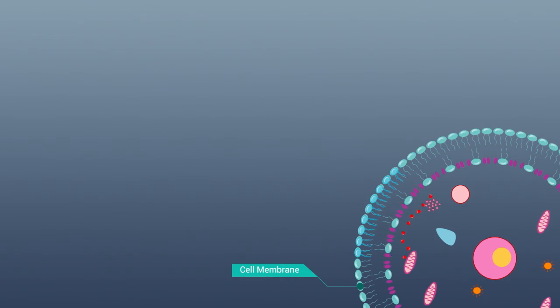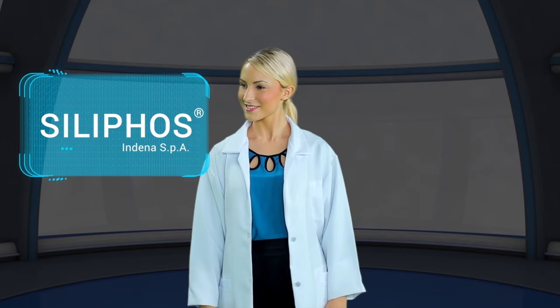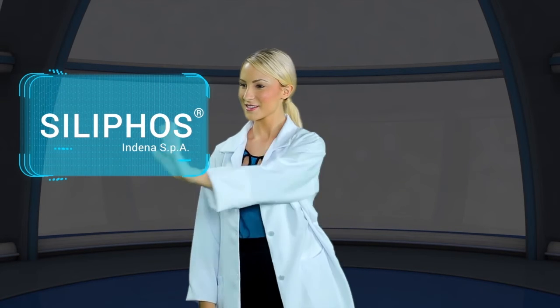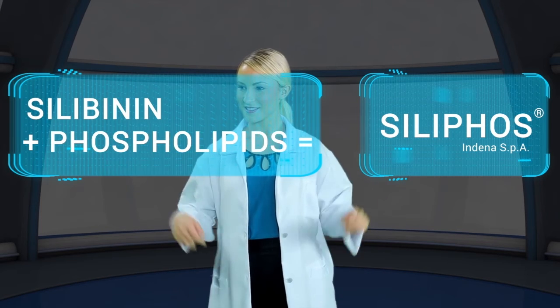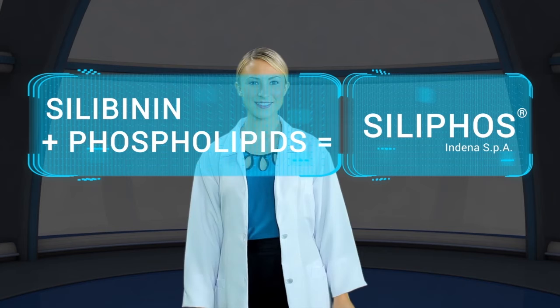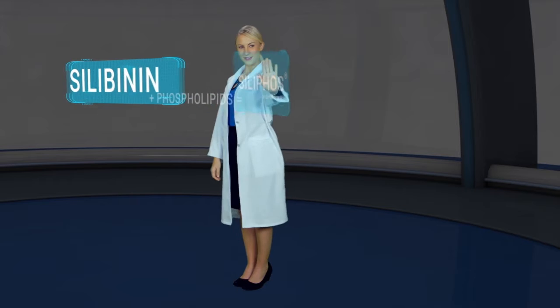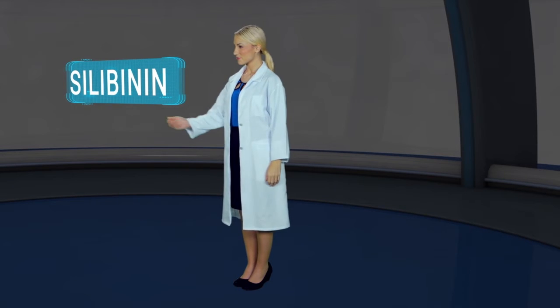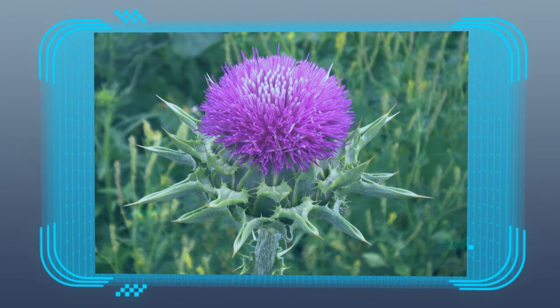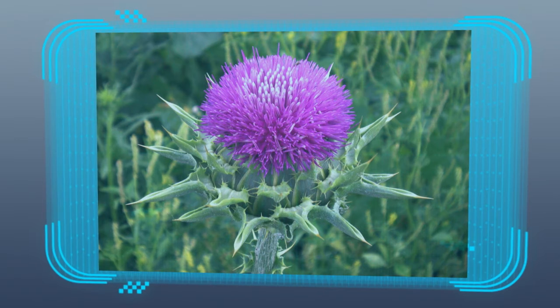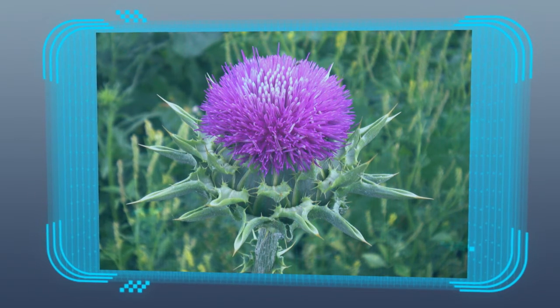Let's take a look at phytosome technology in action with Siliphos. Siliphos, the phytosome form of silibinin, is silibinin and natural soy phospholipids. Silibinin is the most bioactive component of silymarin, a flavonoid complex derived from the milk thistle plant.